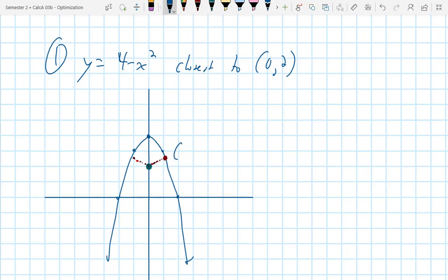So we've done this trick before where I call it x, comma, what? 4 minus x. f(x), which is 4 minus x squared. And then this ordered pair is (0, 2).